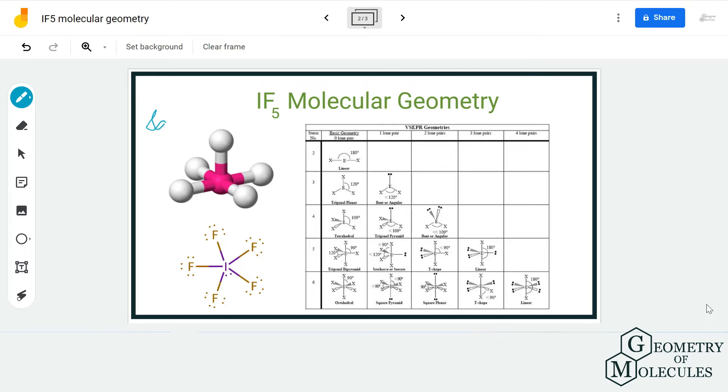According to VSEPR theory, the molecule takes up a shape in such a way that there are minimum repulsive forces between bonding pairs and non-bonding pairs of electrons. Hence, iodine pentafluoride takes this shape.